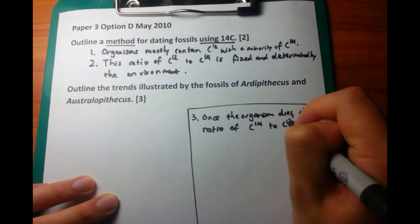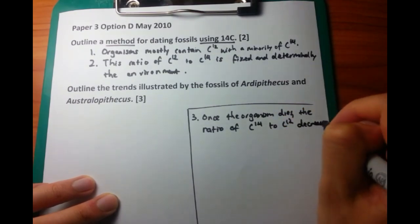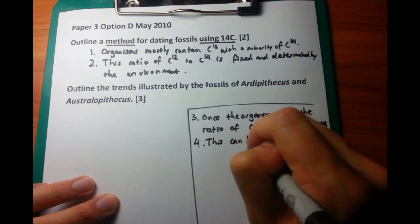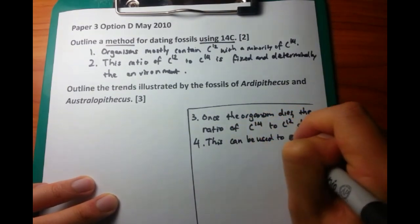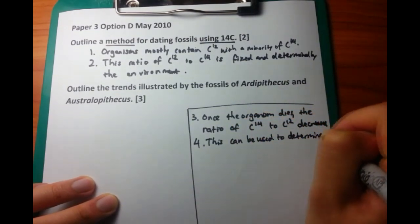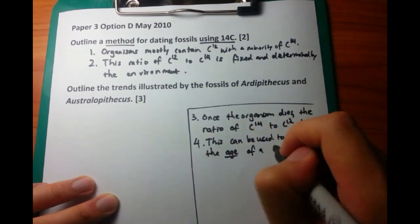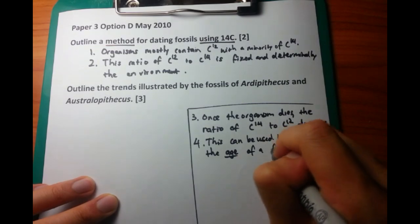So therefore, instead of, say, having 1% carbon-14 to 99%, you might only have 0.5% carbon-14 to 99.5% carbon-12. As you decompose further and further, you'll have less and less carbon-14 relative to carbon-12.